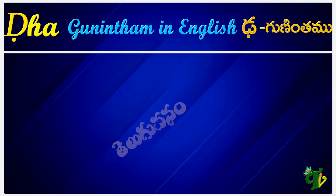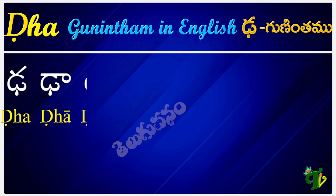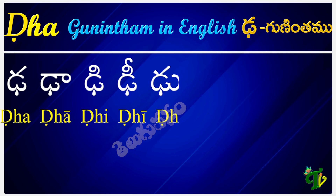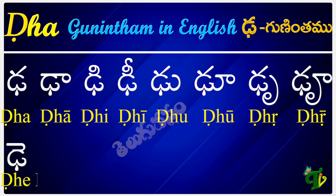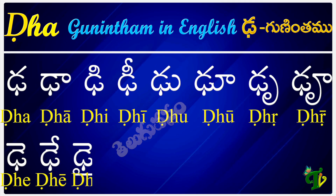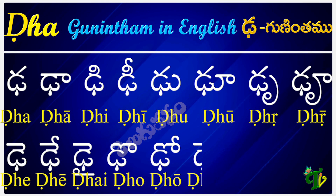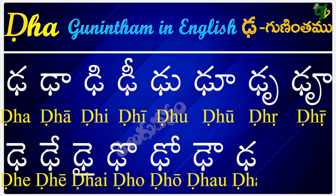Let us read Ḍha gunintam: Ḍha, Ḍhā, Ḍhi, Ḍhī, Ḍhu, Ḍhū, Ḍhṛ, Ḍhṝ, Ḍhe, Ḍhē, Ḍhai, Ḍho, Ḍhō, Ḍhau, Ḍhaṃ, Ḍhaḥ.